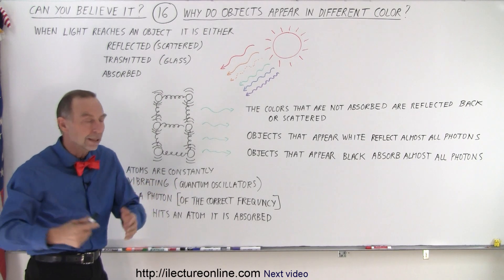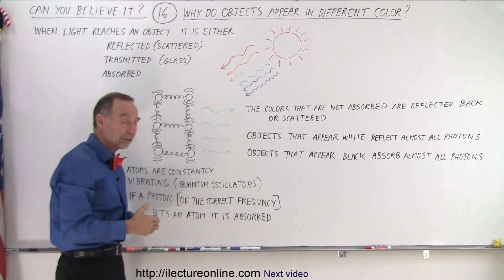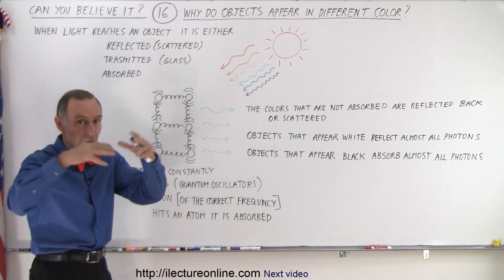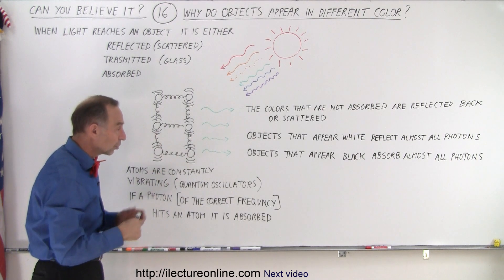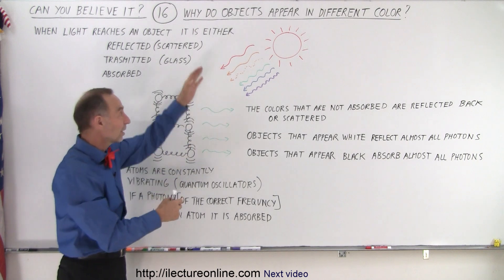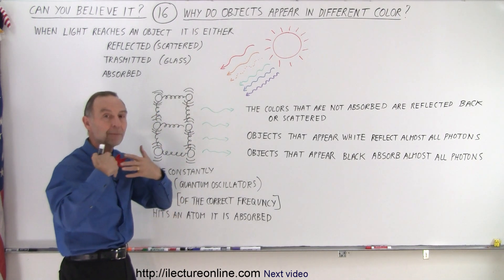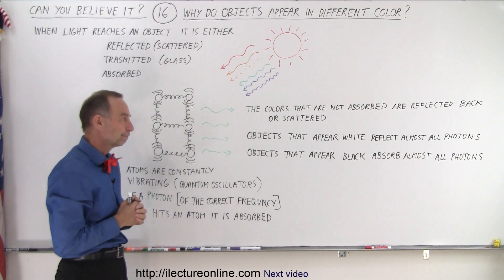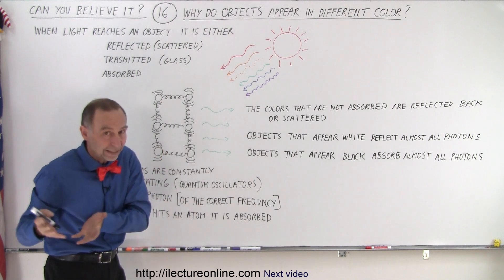If only the blue light is reflected, then we'll see blue if all the other colors are absorbed. So, the color that we see is the color that was not absorbed, the color of the light that hits the object that is simply reflected or scattered back, or the combination of light that's scattered back.